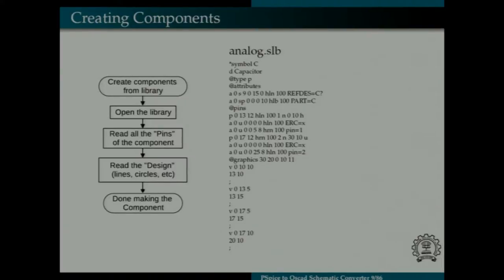Similarly creating components, we read all the, we open the library of PSPICE and read the design. Same design is used in KICAD. Design means lines, circles, rectangles for resistor. This is a part of the SLB file, the PSPICE library file. We take the designs from here, take the attributes which are needed only. KICAD doesn't need all the attributes that PSPICE provides. Only certain attributes are needed, we only read those and discard the rest of them.